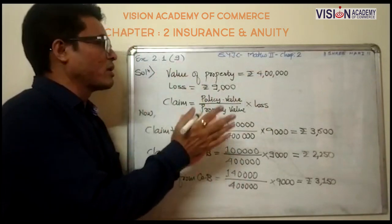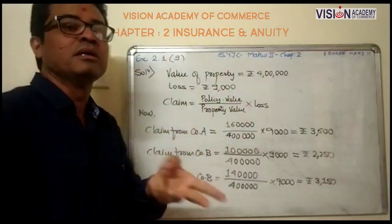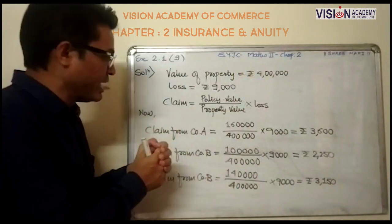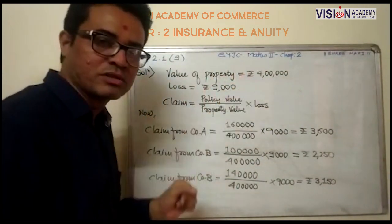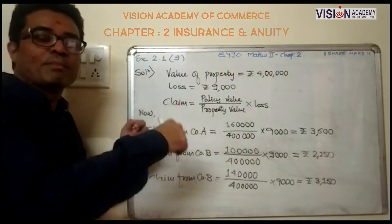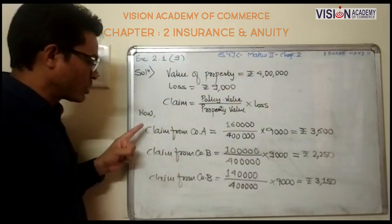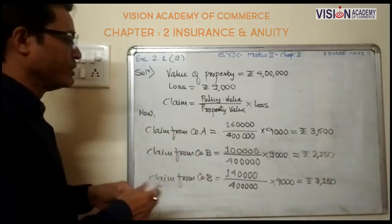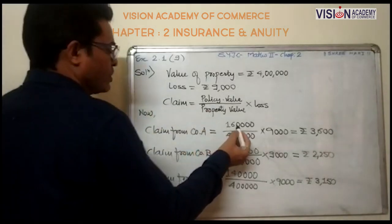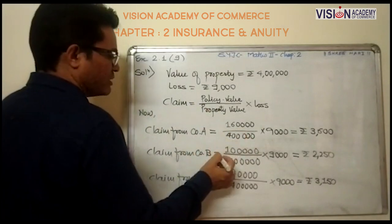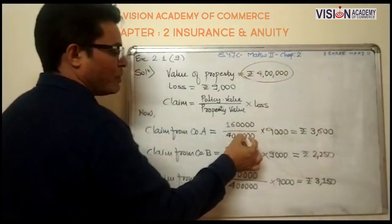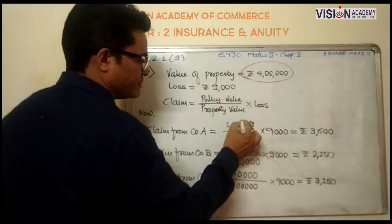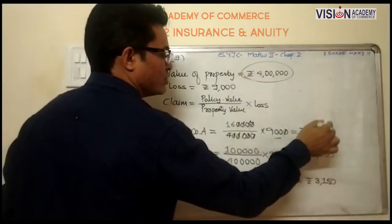We are insured with three companies and claim from each of them. The basic formula for claim is: policy value upon property value into loss. We claim from each company A, B, and C. Claim from company A: policy value 1 lakh 60 thousand, property value 4 lakhs, loss 9,000. By cancellation, claim from company A is rupees 3,600.